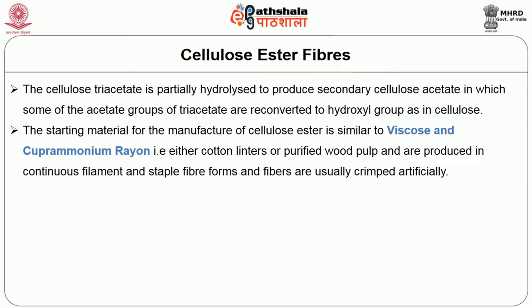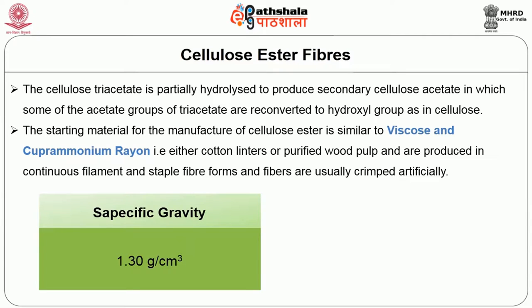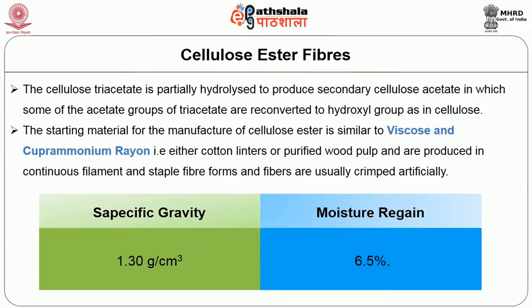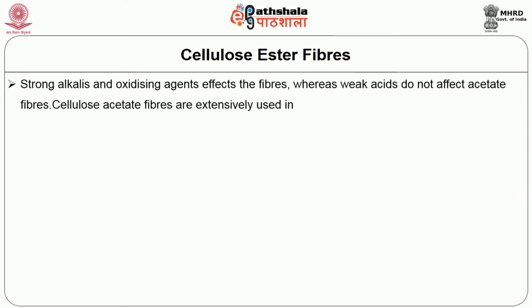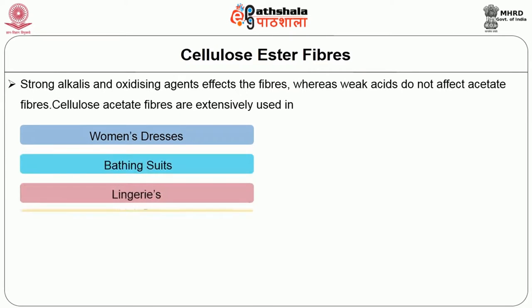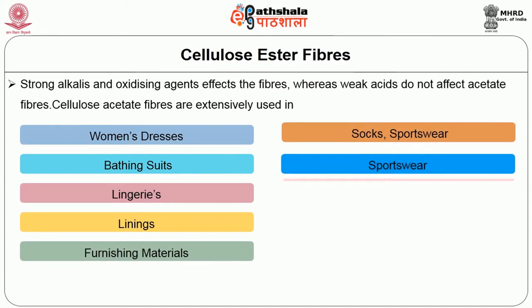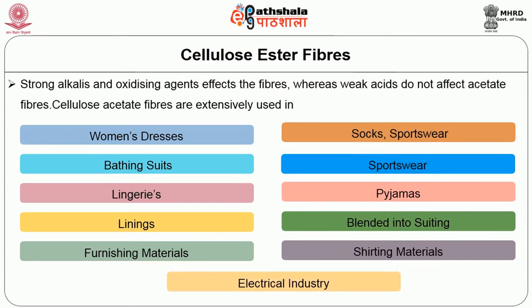The starting material for the manufacture of cellulose acetate is similar to viscose and cupramonium rayon — either cotton linters or purified wood pulp. The fibers are produced in continuous filament form and staple fiber form, and are usually crimped artificially. Its specific gravity is about 1.3 grams per cubic centimeter. Moisture regain under standard conditions is about 6.5 percent. Strong alkalis and oxidizing agents affect the fibers, whereas weak acids do not affect acetate fibers. Cellulose acetate fibers are extensively used in women's dress wears, bathing suits, lingeries, linings, neckties, socks, sports wears, pajamas, blended into suitings and shirting materials, furnishing materials, and also used in electrical goods industry because of its good electrical insulation properties.